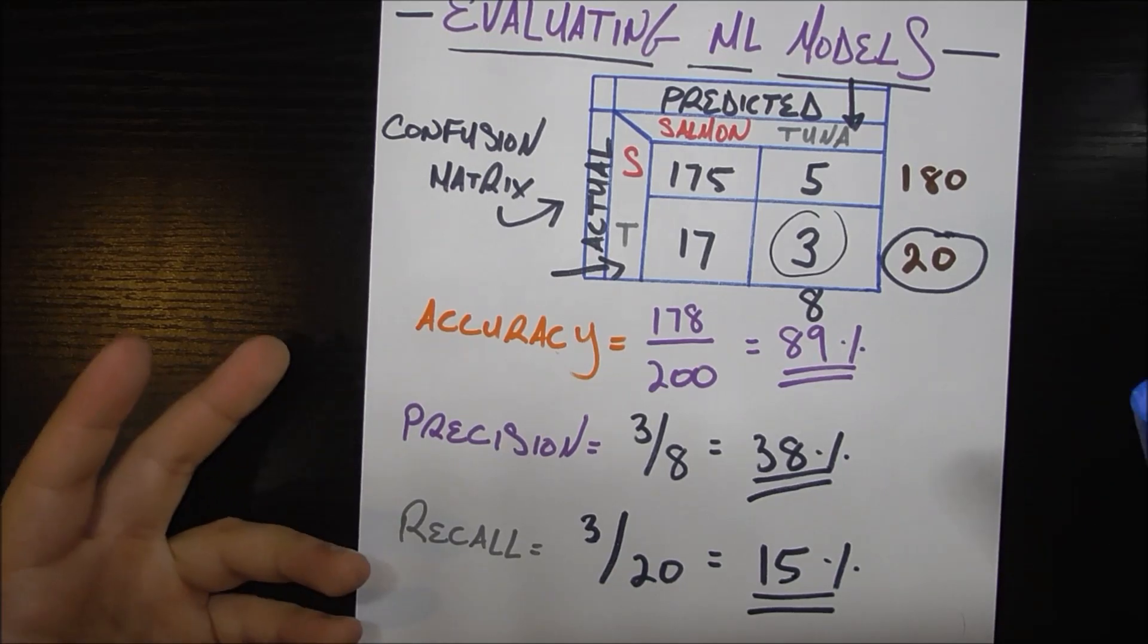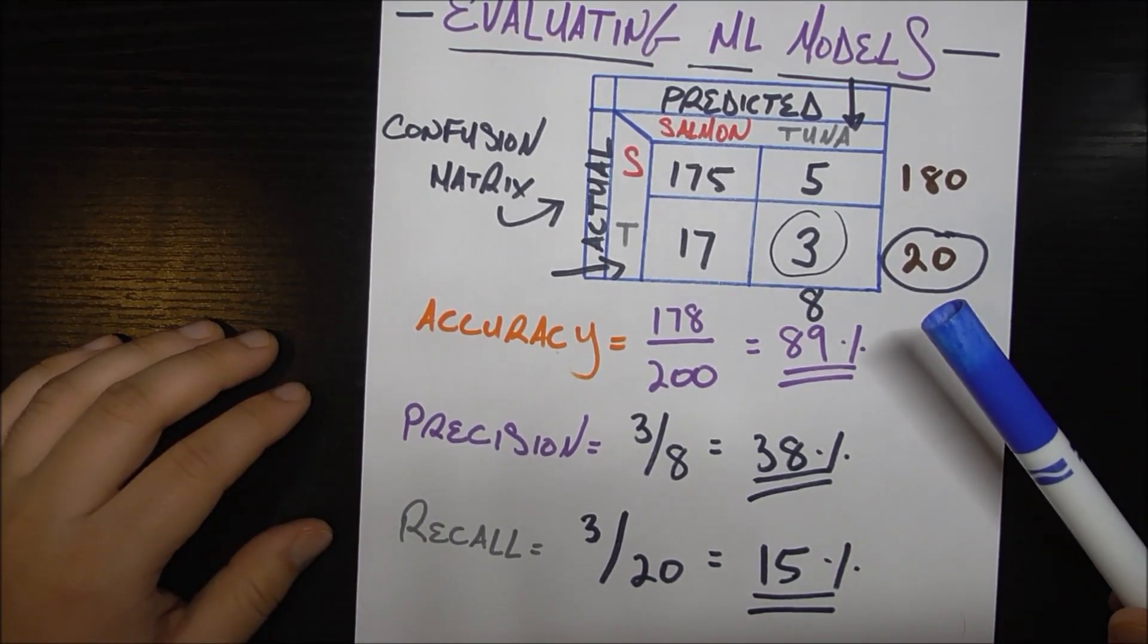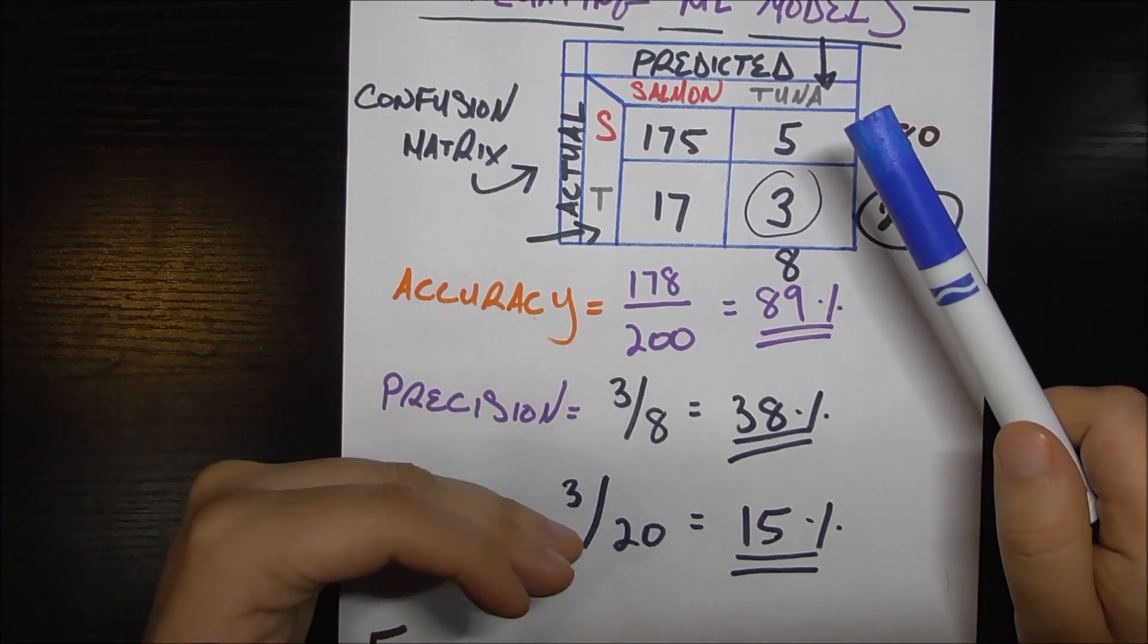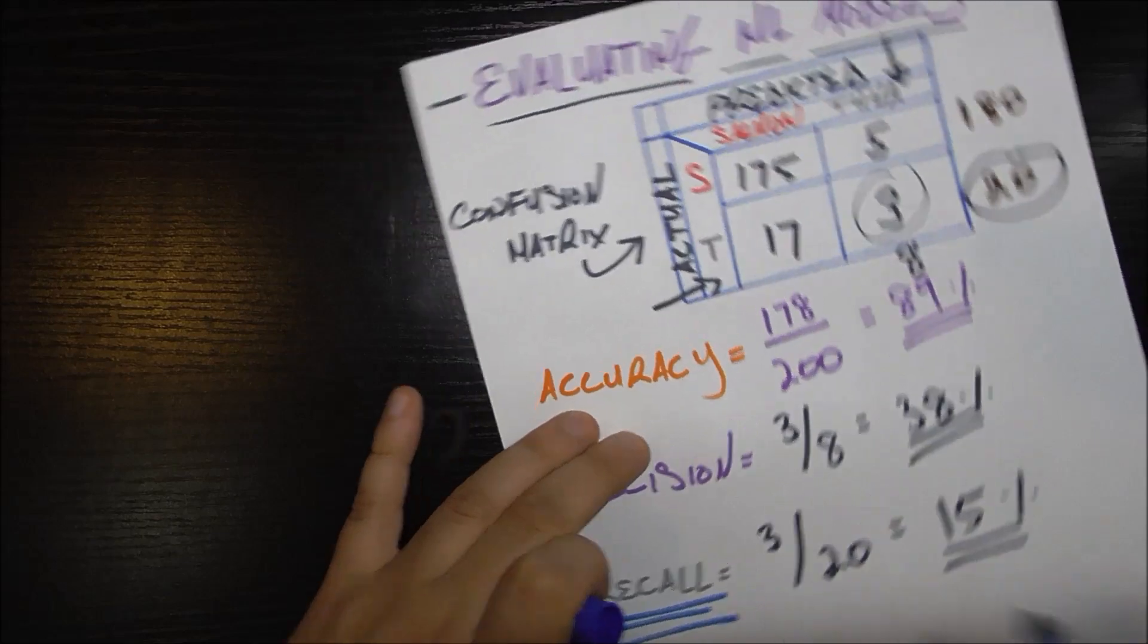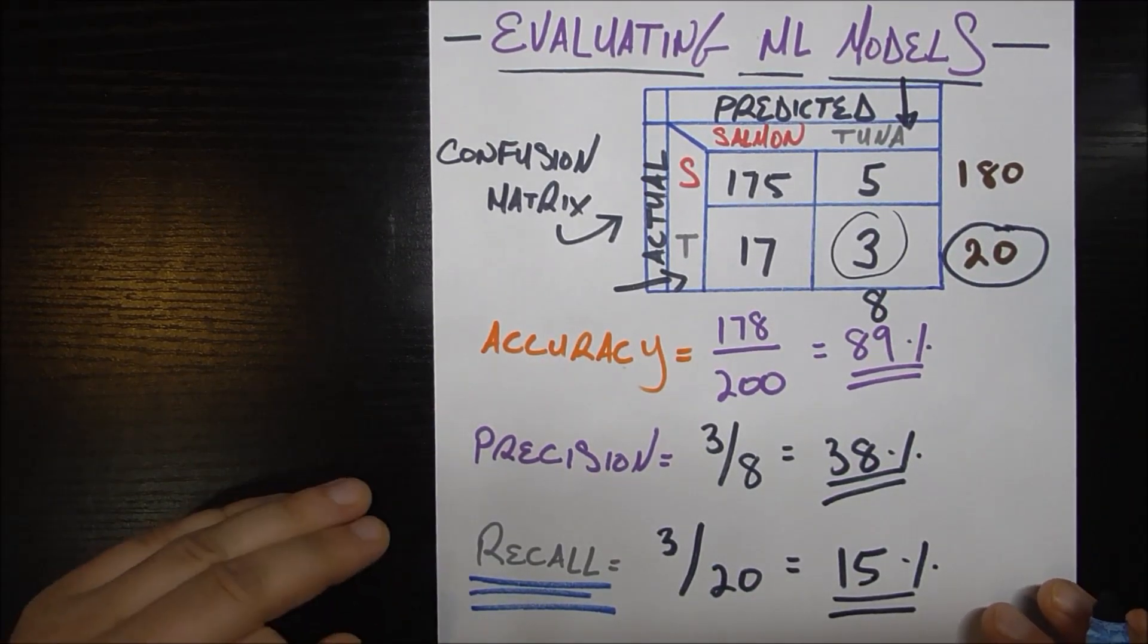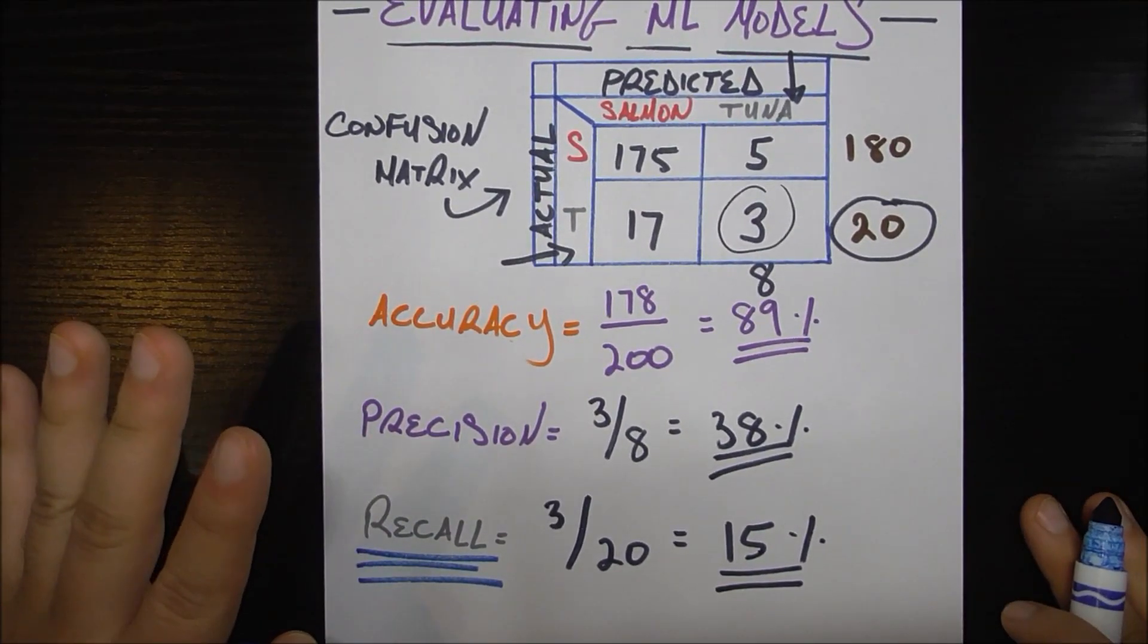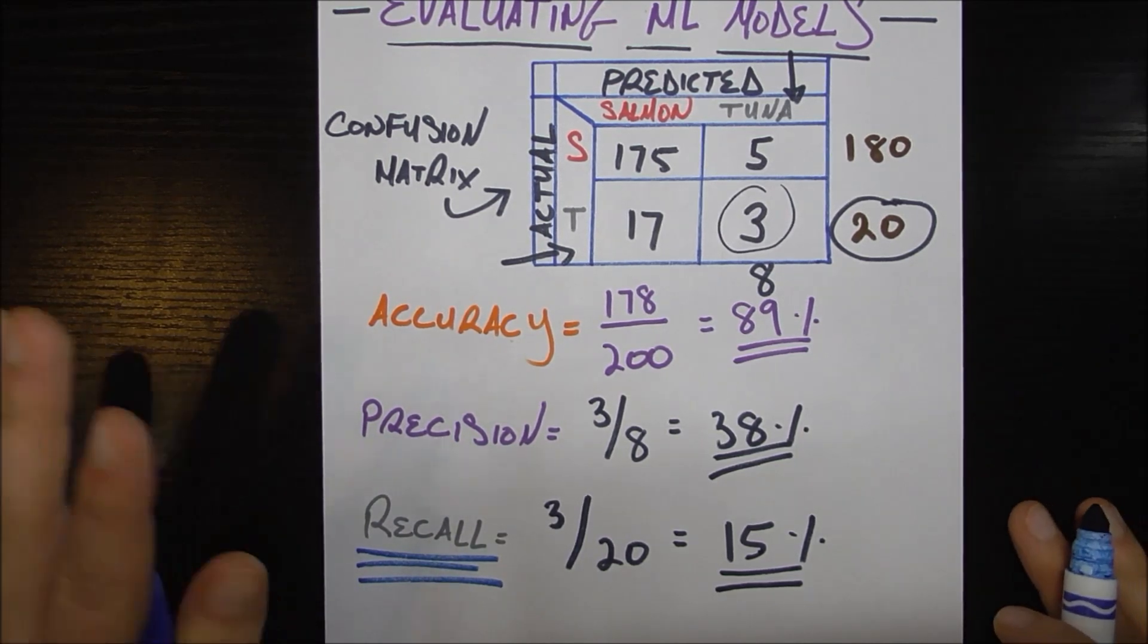If you're trying to for example predict students at risk of dropping out of your college or your high school or something, you probably really care about recall because you care about of all the students that are going to drop out, I want to make sure that I catch a very high percentage of them, which means that I want a very very high recall. It's okay if my precision is not so high in that case because if my precision is low I potentially catch a bunch of students who weren't going to drop out, but it doesn't really hurt me to try to give them resources either way.